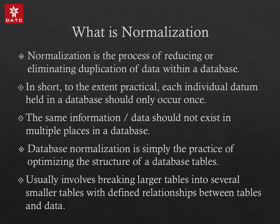Normalization is all about making sure that each datum in a database is only stored once and that the data is not duplicated. This is accomplished by breaking the database into multiple tables. Each table contains a series of data columns which are closely related to each other. This helps to ensure that we reduce or eliminate the duplication of data. But what's so bad about duplicate data?